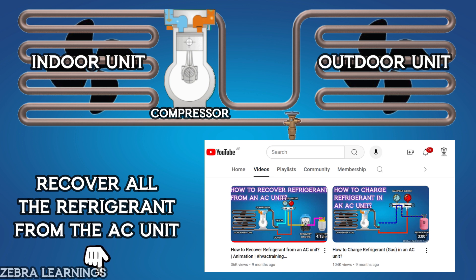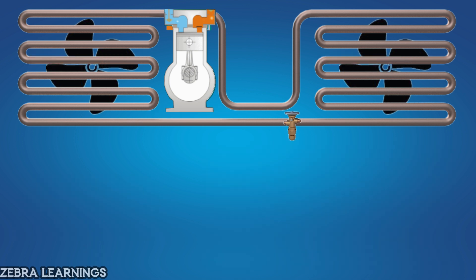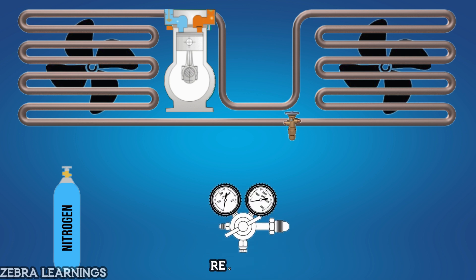Once the refrigerant has been recovered, we will gather the necessary equipment for the nitrogen leak test. This includes a nitrogen cylinder, a regulator, and a manifold gauge.